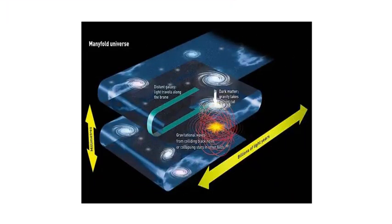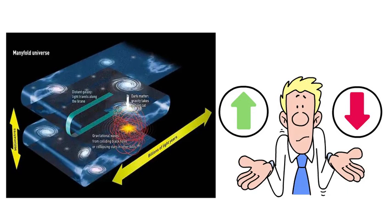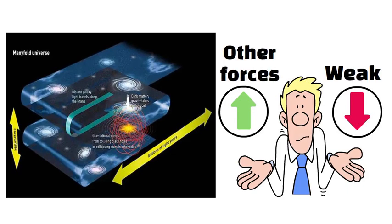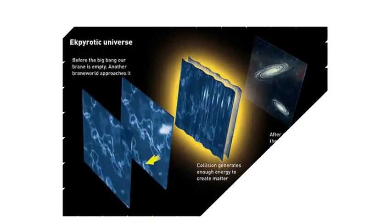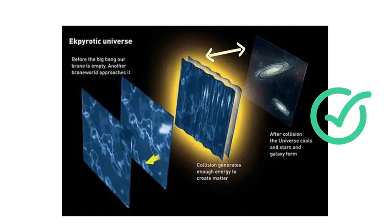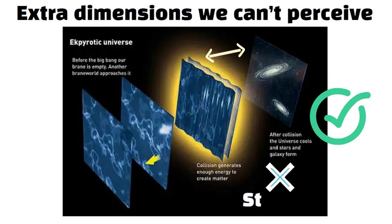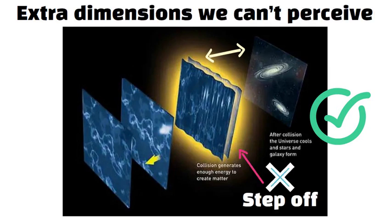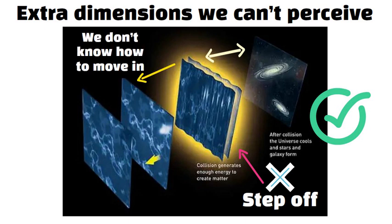Gravity could leak between brains, which might explain why gravity seems so weak compared to other forces. Some of its strength might spill into higher dimensions. If brain cosmology is correct, there could be entire worlds extremely close to us in extra dimensions we can't perceive. Even though we can't step off our brain, other sheets might be just a tiny distance away in a direction we don't know how to move in.